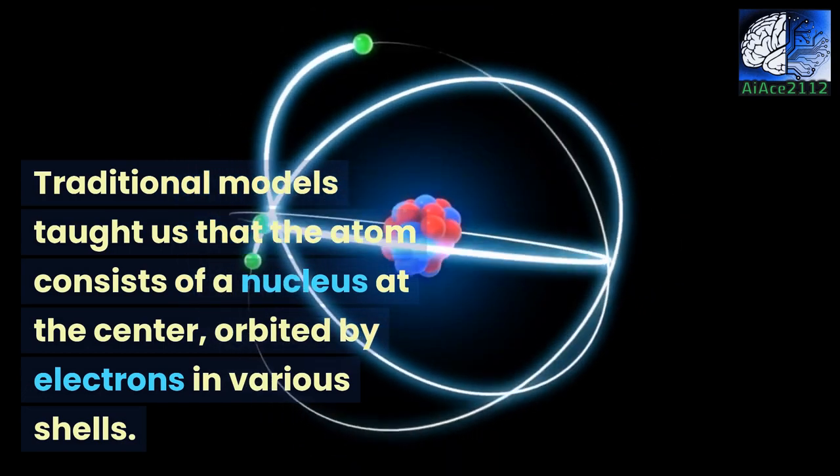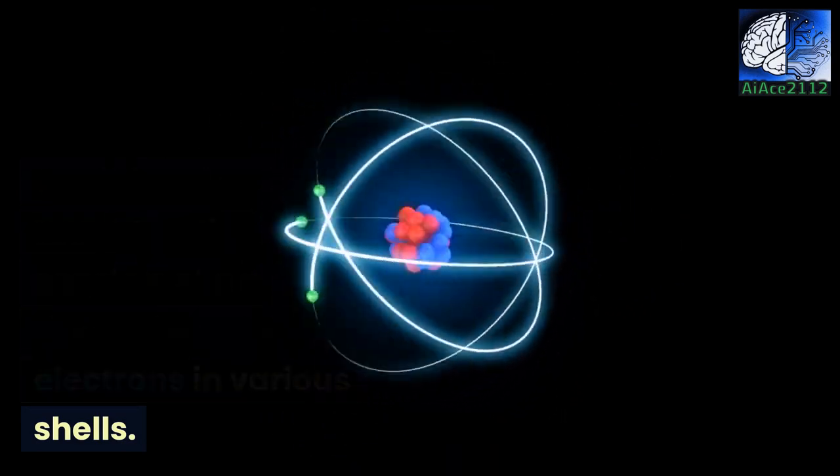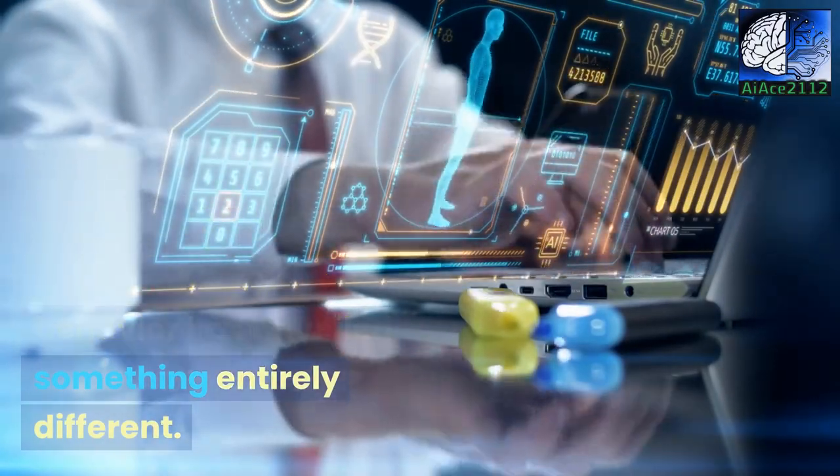Traditional models taught us that the atom consists of a nucleus at the center, orbited by electrons in various shells. But AI's revolutionary analysis of atomic behavior has unveiled something entirely different.